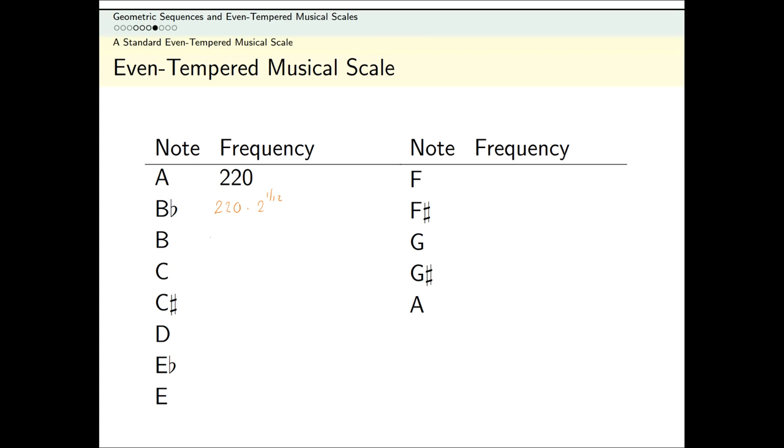The frequency of B should be the frequency of B-flat times R, which I can write as 220 times 2 to the 2 over 12. And we continue on like this.